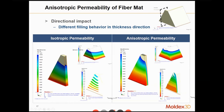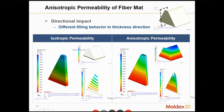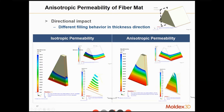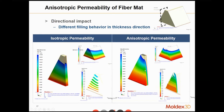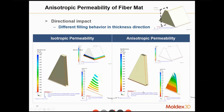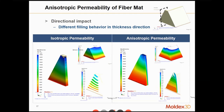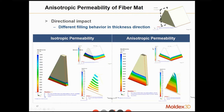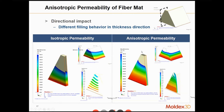When using isotropic permeability, the flow front looks like a normal smooth flow front. But when using anisotropic permeability, the melt may go faster in one direction — similar in idea to using distribution media — because the nature of that ply allows the melt to go faster in the vertical direction.